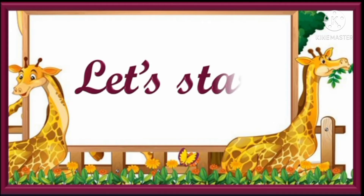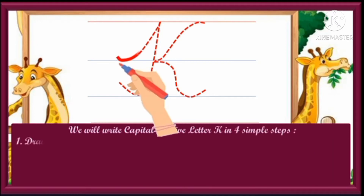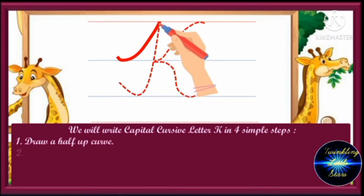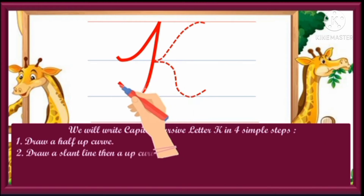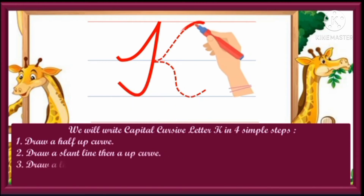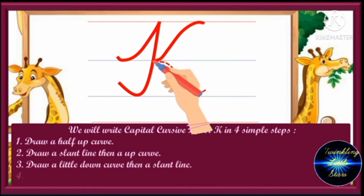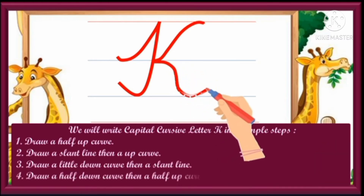Let's start. We will write capital cursive letter K in four simple steps. One: draw a half up curve. Two: draw a slant line then up curve. Three: draw a little down curve then a slant line. Four: draw a half down curve then a half up curve.